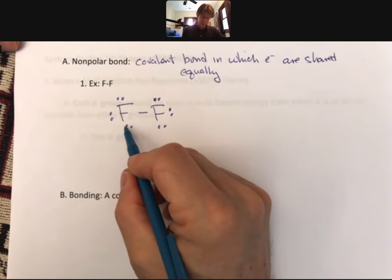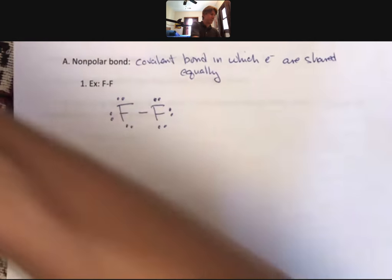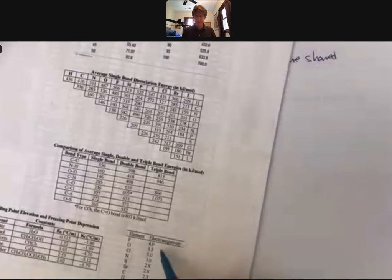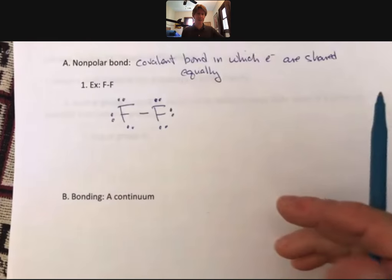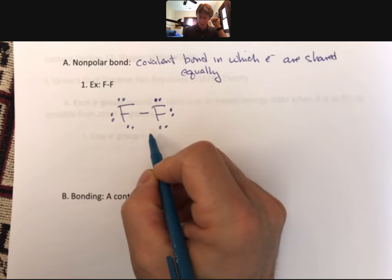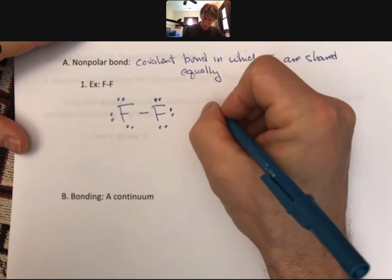You can see that both fluorines have octets because the octet rule rules. If we were to look up the electronegativity, it's four for fluorine, perfect four, that's the highest it goes. And no difference in electronegativity, no dipole.